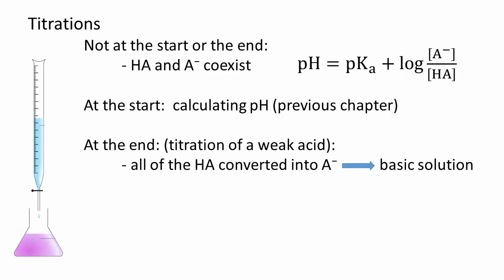At the end of the titration of a weak acid, all of the weak acid is converted to the weak conjugate base. The solution will be slightly basic and have a pH higher than 7.